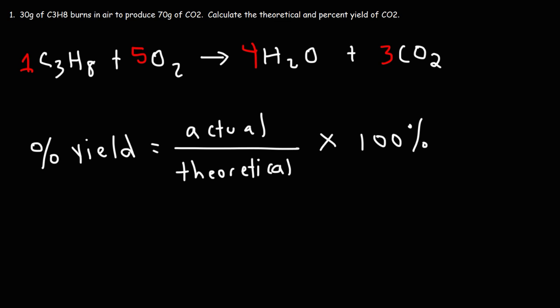The actual yield must be given to us because it's measured experimentally. In this reaction, we measure 70 grams of CO2 being produced — that is our actual yield. What we need to calculate is the theoretical yield: the maximum amount of CO2 that can be produced. To do that, we convert grams of reactant to grams of product.